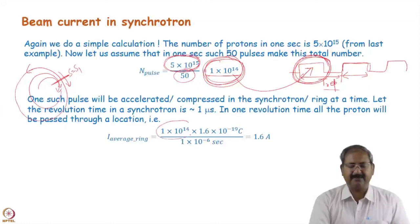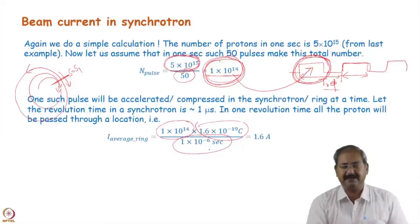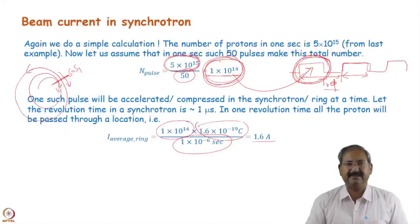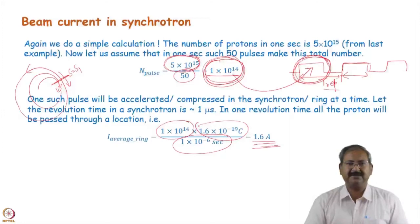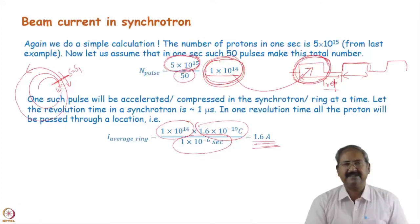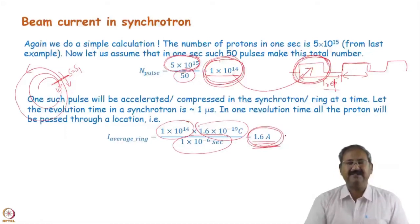Number of protons multiplied by the charge and divided by the time — here time is one microsecond — gives you 1.6 ampere of current. In a straight path we obtained 800 microampere, while in the ring it is 1.6 ampere. It is a huge current from an accelerator physics point of view.